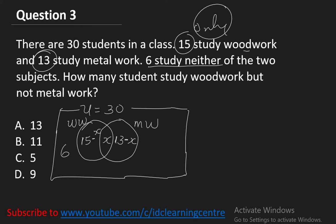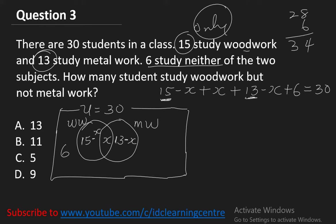Adding all regions: (15 minus x) plus x plus (13 minus x) plus 6 equals 30. Simplifying: 15 plus 13 plus 6 is 34, and minus x plus x gives zero, leaving minus x. So 34 minus x equals 30. Collecting like terms: x equals 34 minus 30, which is 4. x equals 4 represents those who studied both woodwork and metalwork.